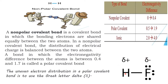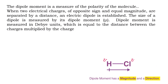Hence, polar covalent molecules act as dipole molecules. In any polar covalent molecule, there will be a partial positive and a partial negative charge separation, designated as a dipole. Covalent molecules could be of two types: polar covalent molecules and nonpolar covalent molecules.